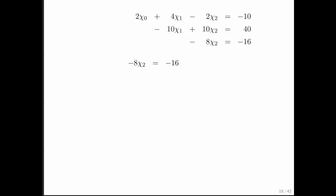So if we repeat that equation right here, then we notice that we can divide both sides by minus 8. And if we then work it out, we find that chi2 is equal to 2.